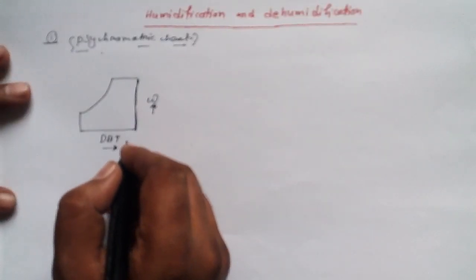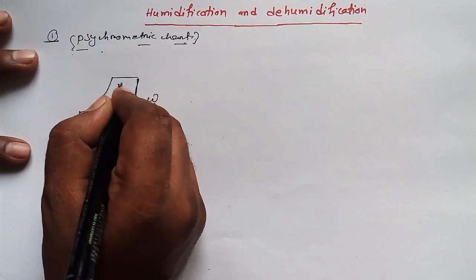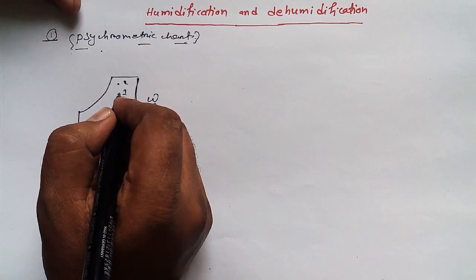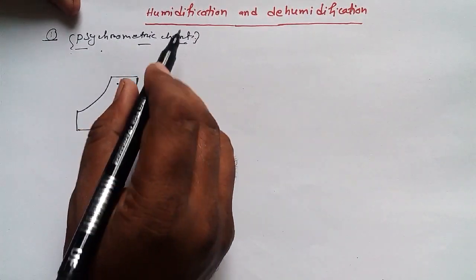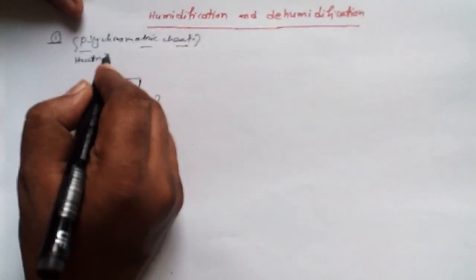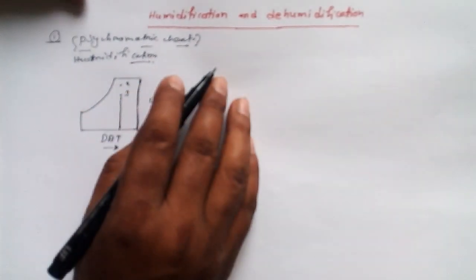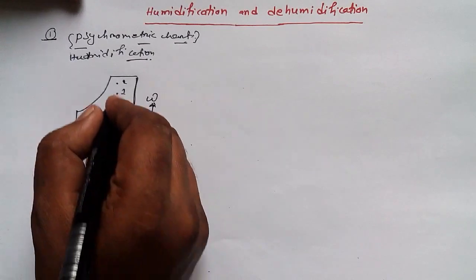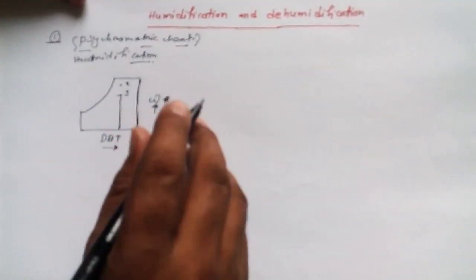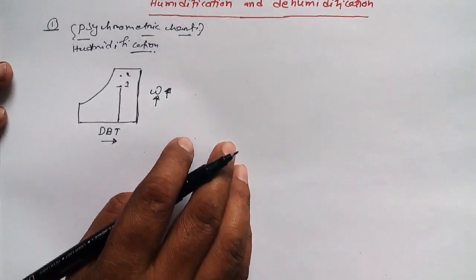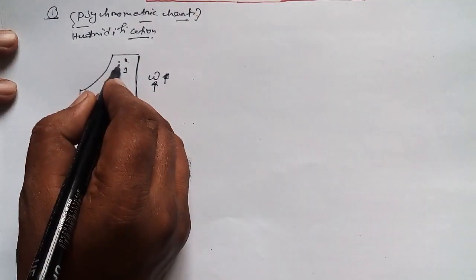So let's move to the topic. If there is a condition one and condition two, and humidification is going on, then what we have to do is increase its specific humidity. This is all about humidification — we are going to increase specific humidity.